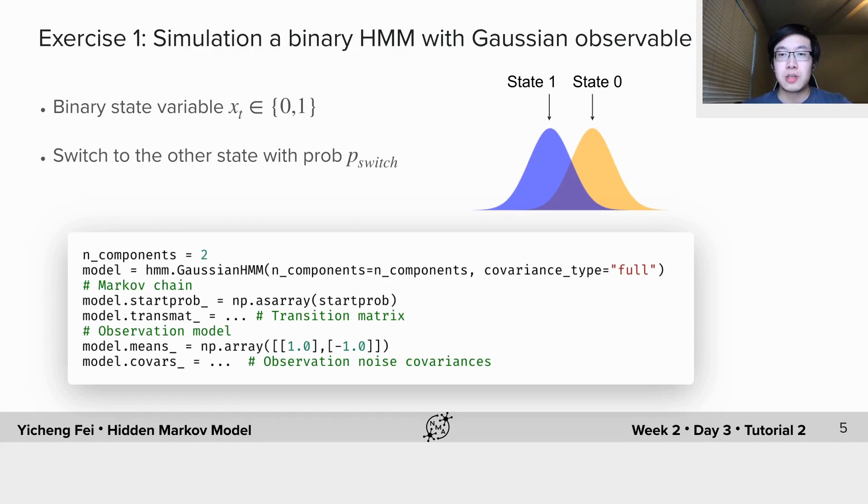As for the observation model, if we are in state 0 at some time, the measurement at that time will be a Gaussian variable centered at 1 with some noise. If we are in state 1, the measurement will be centered at minus 1 with some noise, as shown in the figure here.